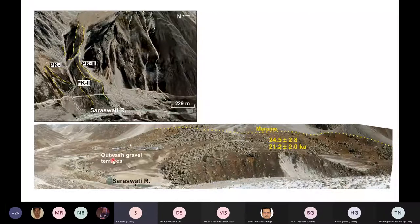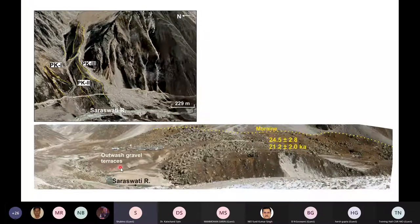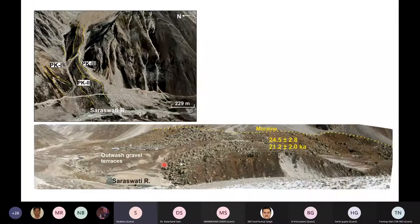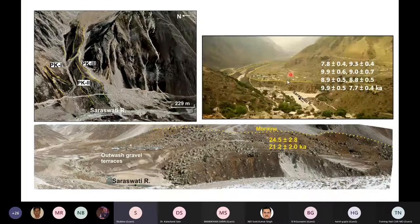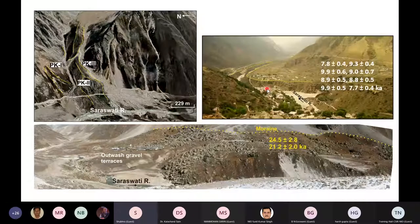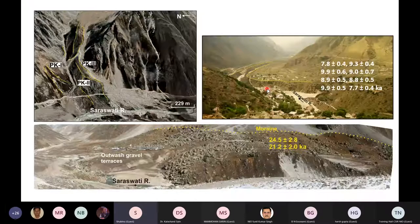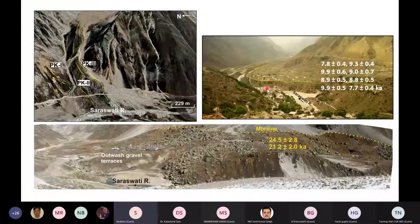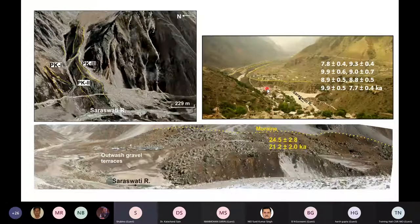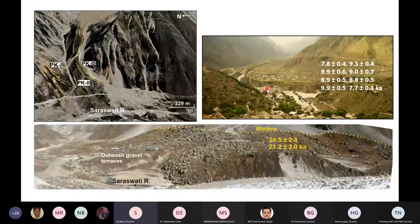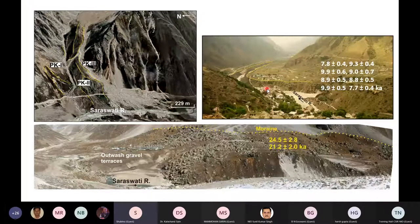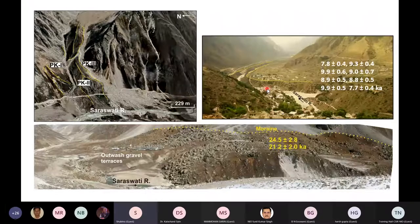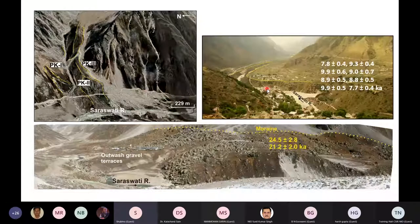Another interesting observation was that the outwash gravel terraces which were either abutting the moraines or they were present as extensive surfaces in further downstream of the valley, they were dated to the period of early Holocene which corresponds with the intensification of the monsoon. Now this became very interesting because if monsoons were to trigger an advance especially in this region, we should get the moraines corresponding to this event and not the diagnostic feature of the deglaciation event.